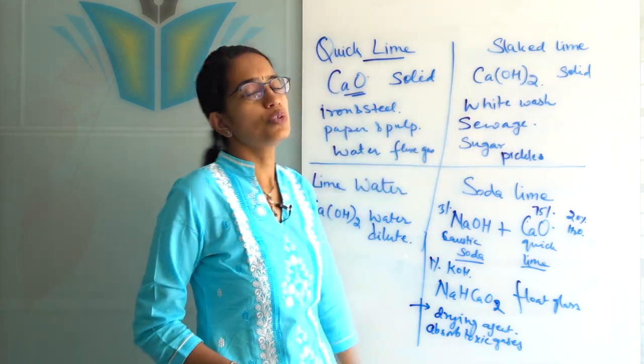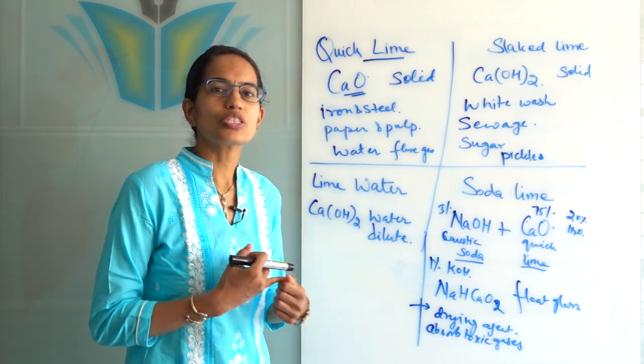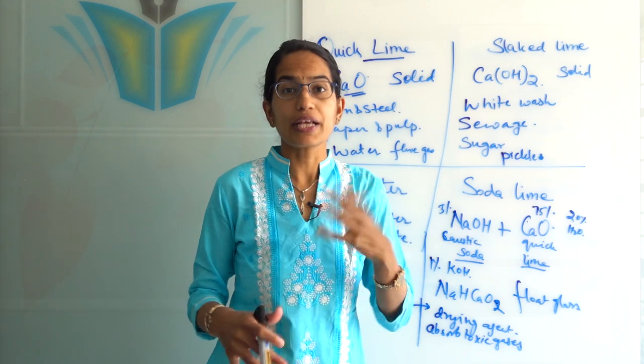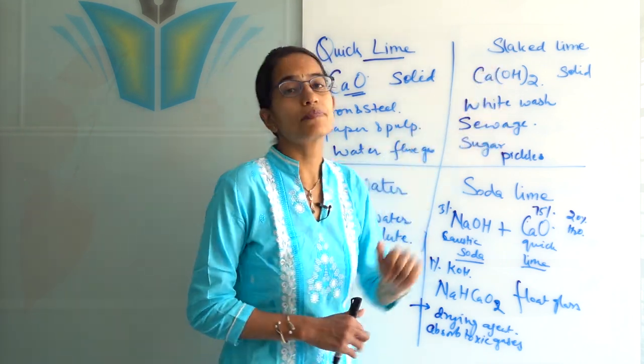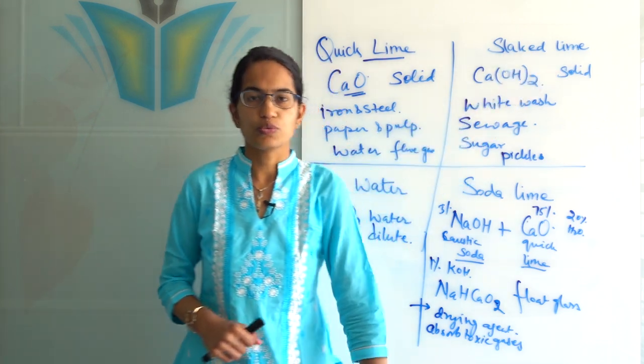Also it is used in the manufacturing of sugar. So in the sugar industries, slaked lime is used. It is used in pickle manufacturing. Then it is also used in treatment of sewage. So in the sewage treatment plant, slaked lime is also used.